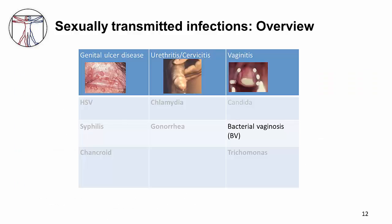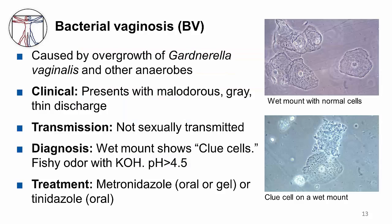Let's now turn our attention to bacterial vaginosis, or BV. The pathogenesis of BV is uncertain, but it is thought to be caused by an overgrowth of Gardnerella vaginalis and other anaerobes. Patients may present with mild odorous gray thin discharge. A wet mount will show a clue cell, which is an epithelial cell whose borders are obscured by bacteria. See the images on the slide illustrating clue cells with obscured borders, in contrast to normal epithelial cells with beautifully regular borders. In BV, the pH will be greater than 4.5, which is normally less than 4.5, reflecting the imbalance of bacteria. Treat with metronidazole or tinidazole.